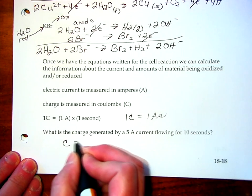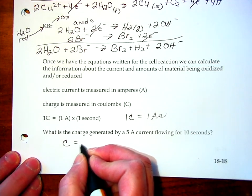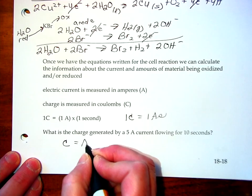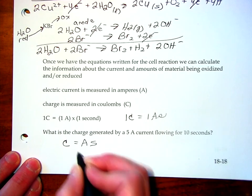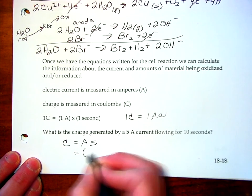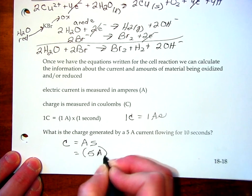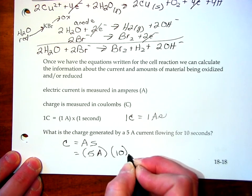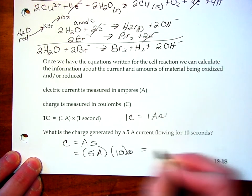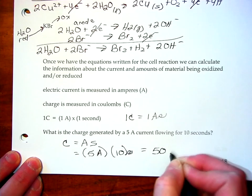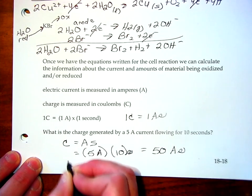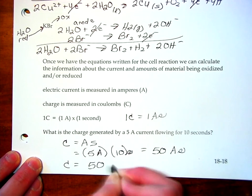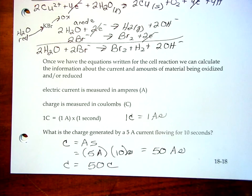Well, we know the charge is equal to the current in amps times the time in seconds. So, that's equal to 5 amps running for 10 seconds is equal to 50 ampere seconds. So, my charge is equal to 50 coulombs because a coulomb is an ampere second.